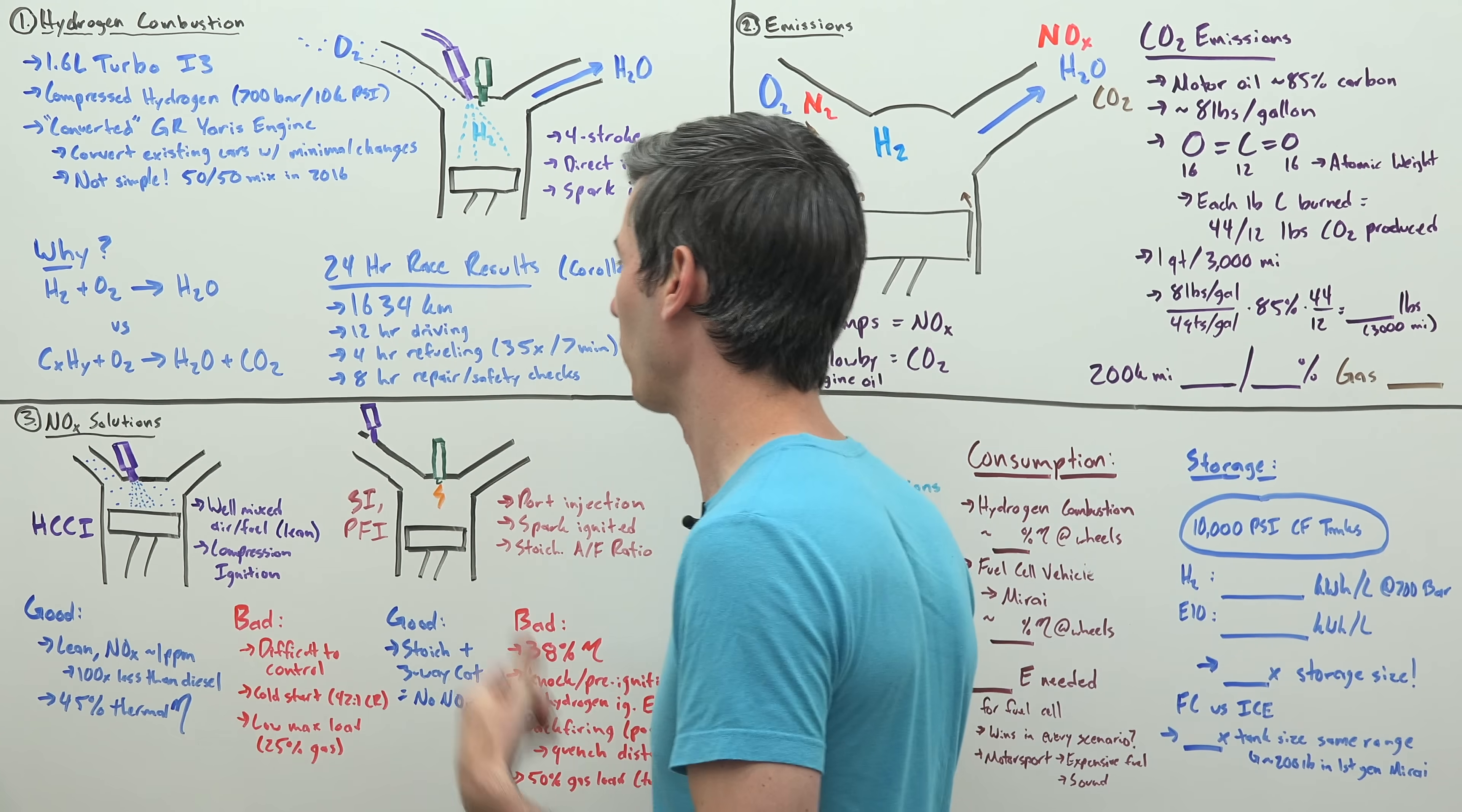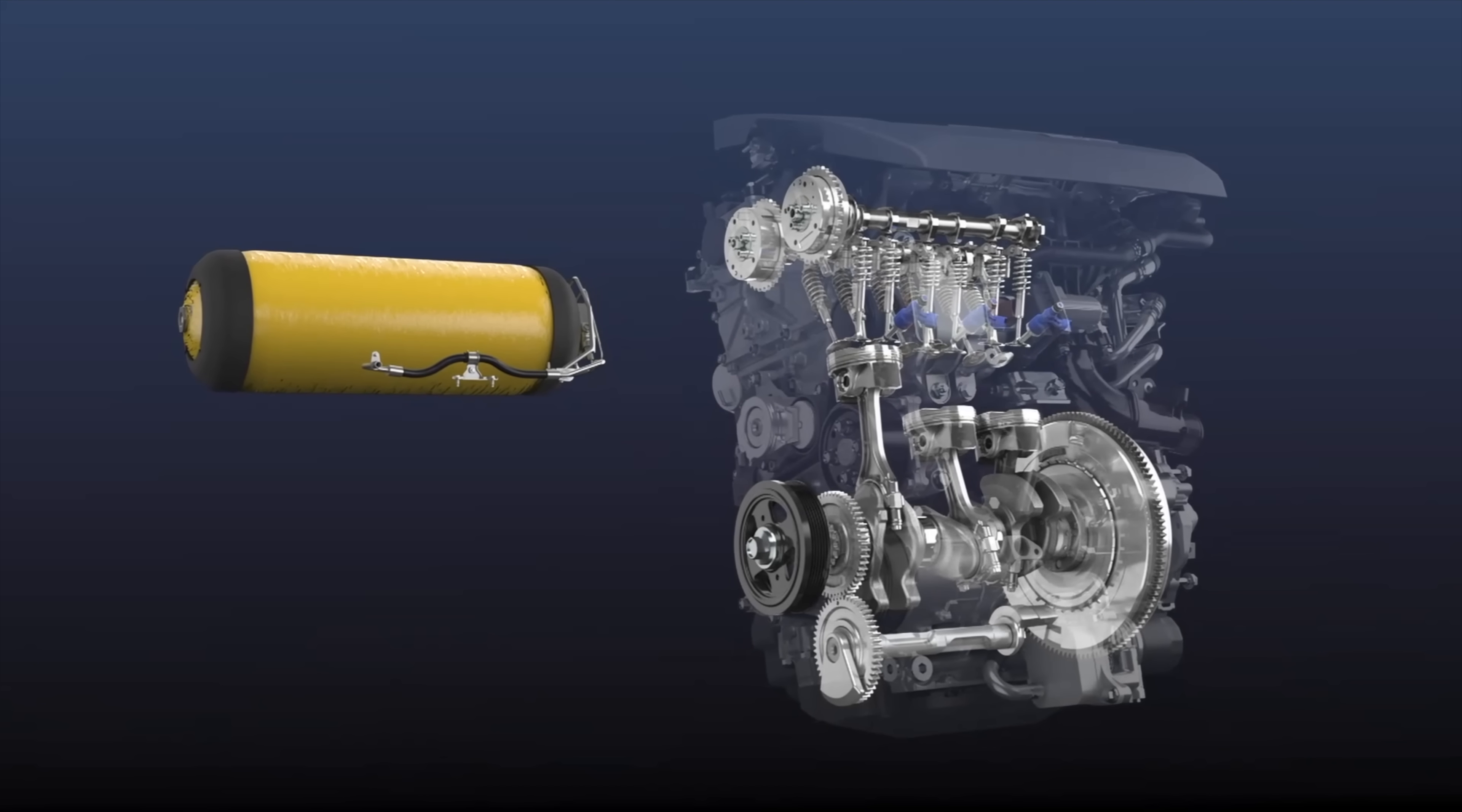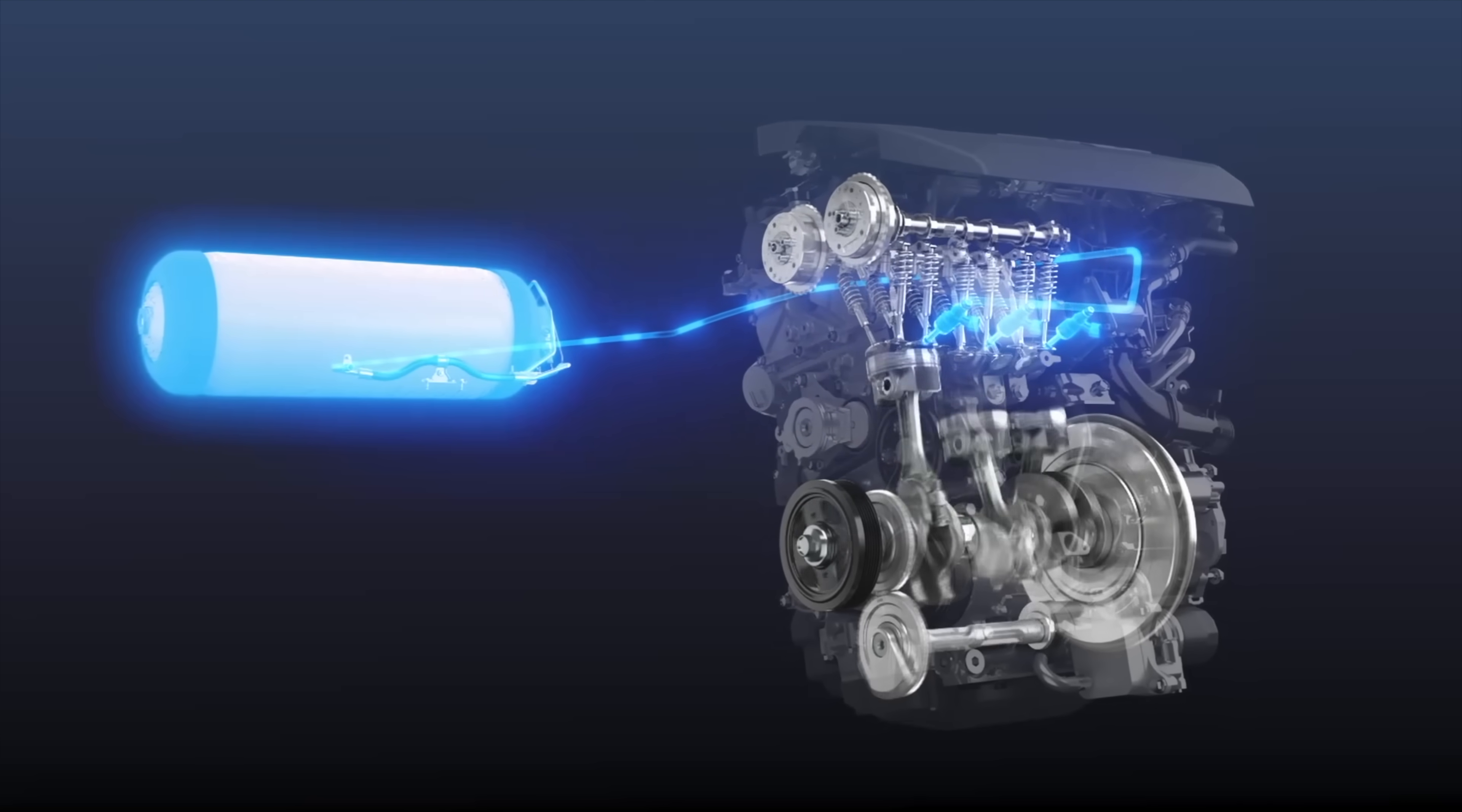8 hours of time spent repairing the vehicle from things that had broken and doing safety checks. These hydrogen tanks are storing compressed hydrogen at about 10,000 psi, 700 bar.